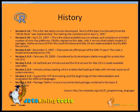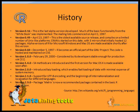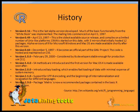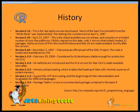This is a version history of R. Version 0.16 was the last alpha version developed. Version 0.49 was released on April 23, 1997. This is the oldest available source release and compiles on a limited number of Unix-like platforms.